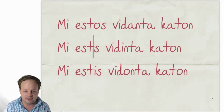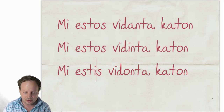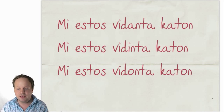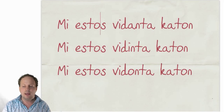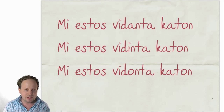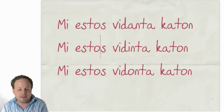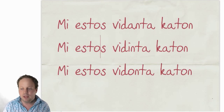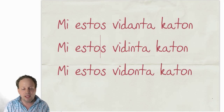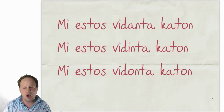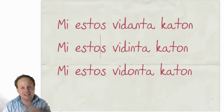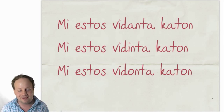Let's move this into future tense now. MI ESTOS VIDANTA KATON means 'I will be seeing a cat.' MI ESTOS VIDINTA KATON means 'I will have seen a cat.' MI ESTOS VIDONTA KATON means 'I will be about to see a cat.' It gets really complex in English.